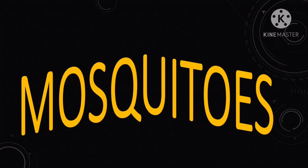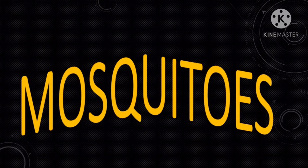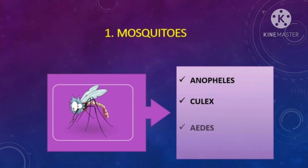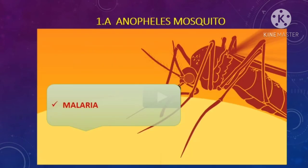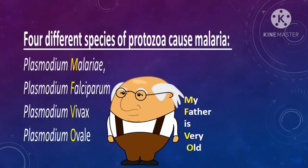We will learn about each vector one by one. First on the list are mosquitoes. There are three common types: Anopheles, Culex, and Aedes. The female Anopheles mosquito causes malaria. Anopheles acts as a vector for the protozoa Plasmodium, which is responsible for causing malaria in human beings.